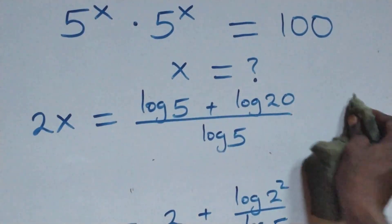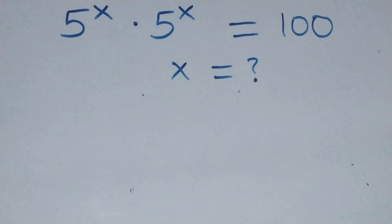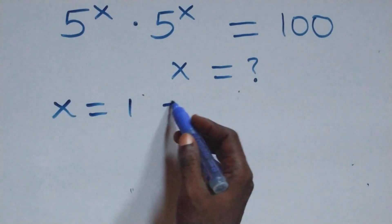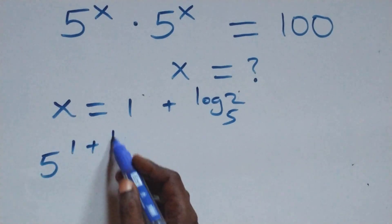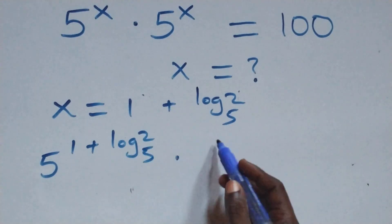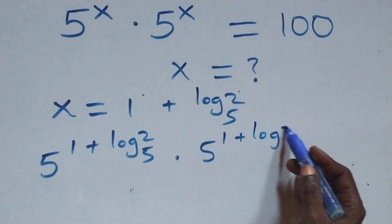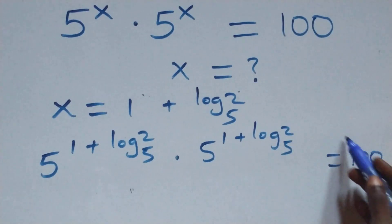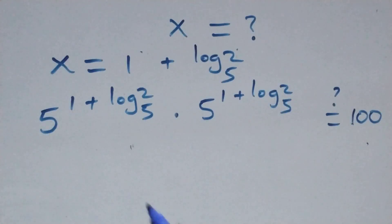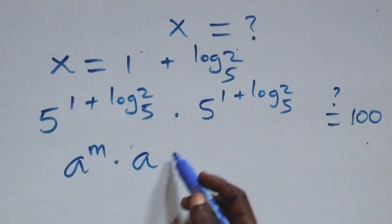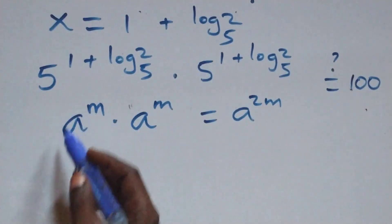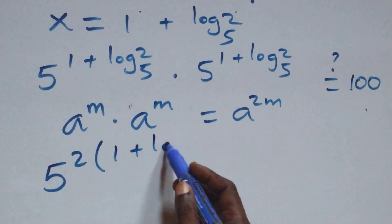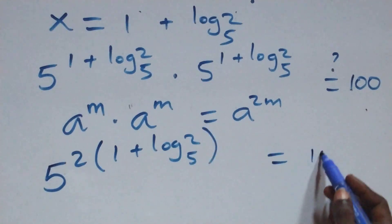Let's check if this satisfies the given problem. We substitute x equals 1 plus log₅2. What we have becomes 5 raised to power (1 plus log₅2) times 5 raised to power (1 plus log₅2) is equal to 100. Since we have the same base multiplying — a^m times a^m equals a^(2m) — we can write this as 5 raised to power 2 times (1 plus log₅2) equals 100 on this side.